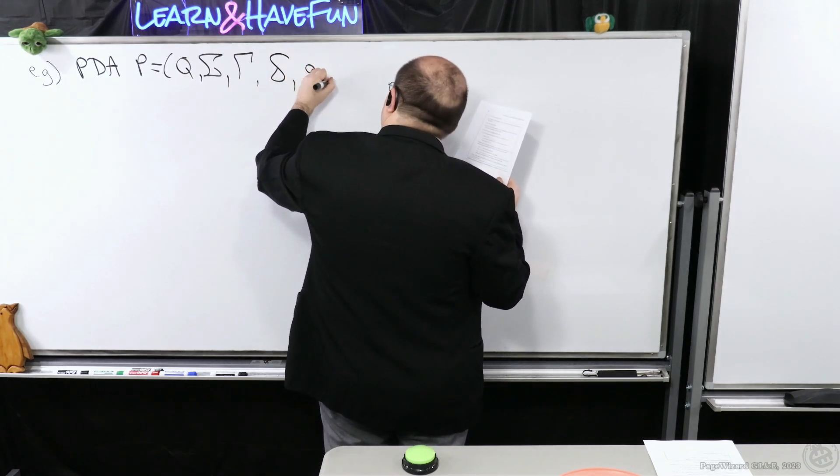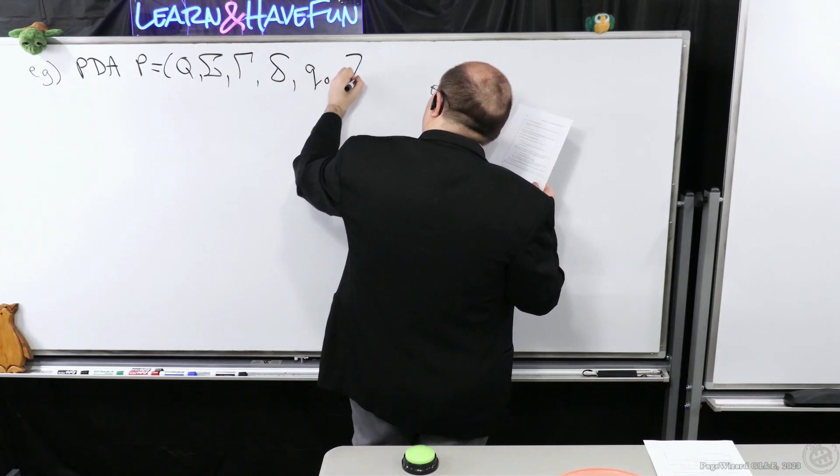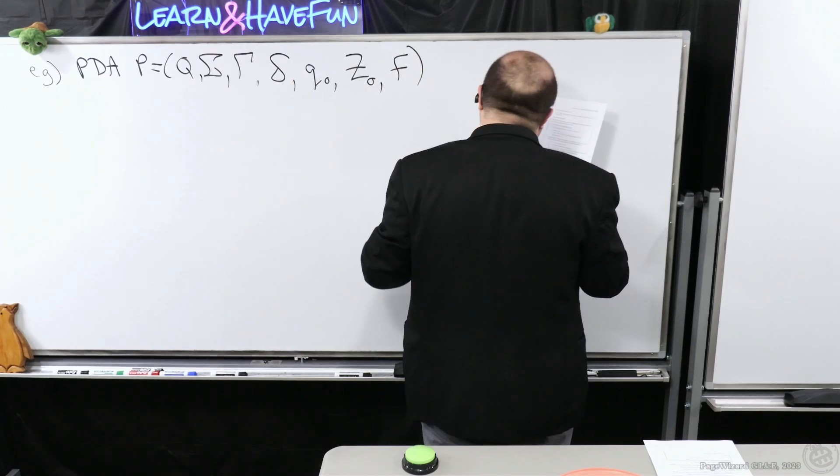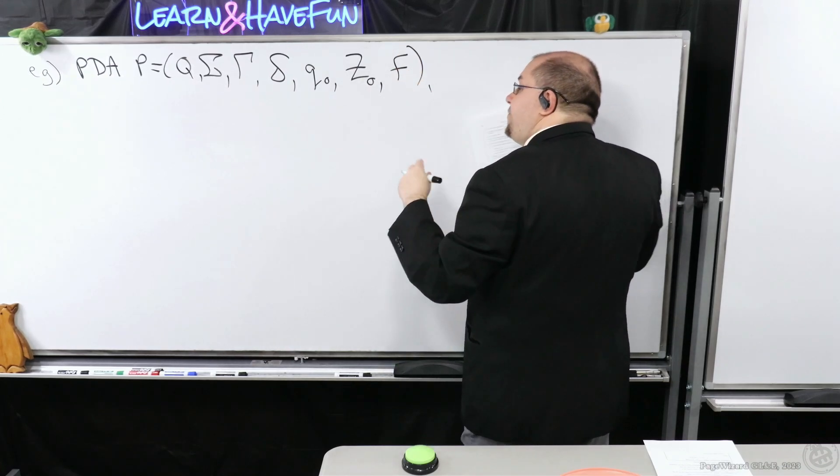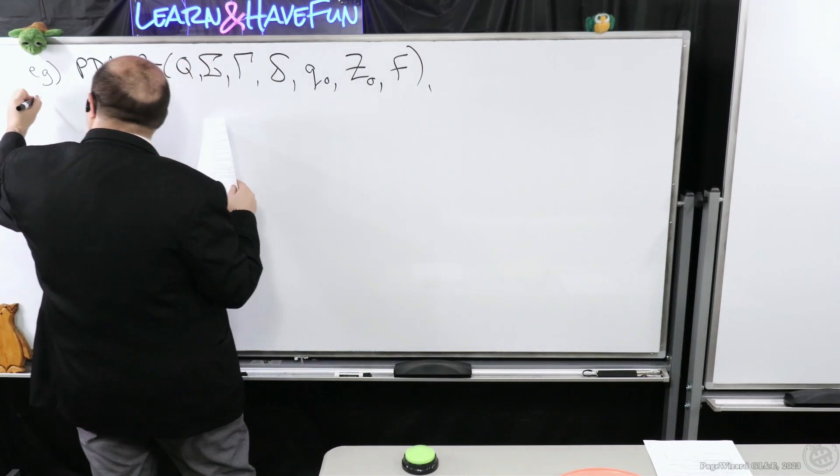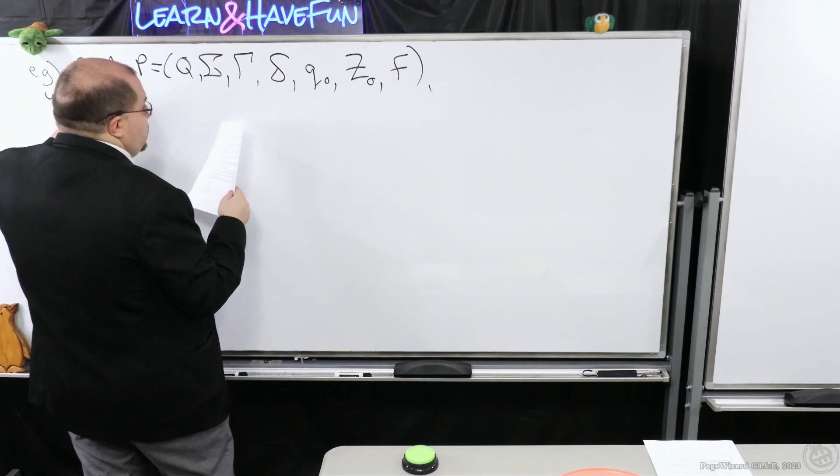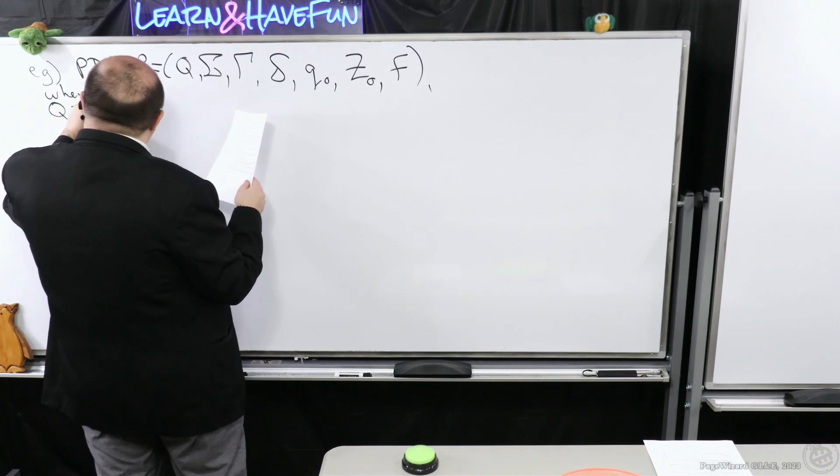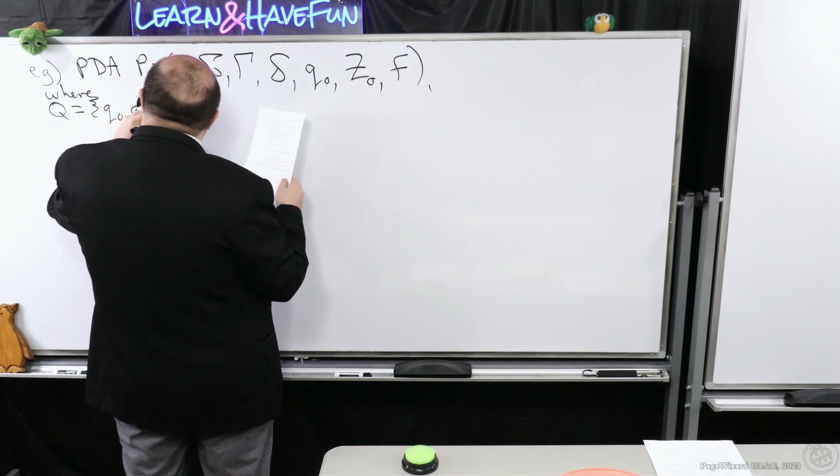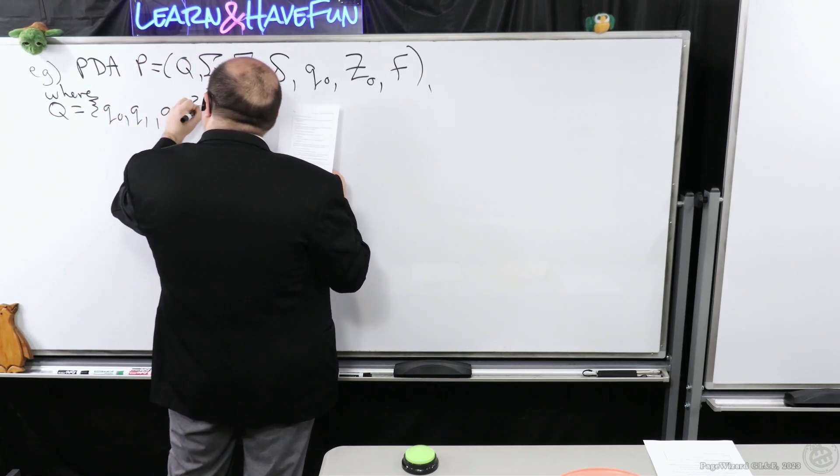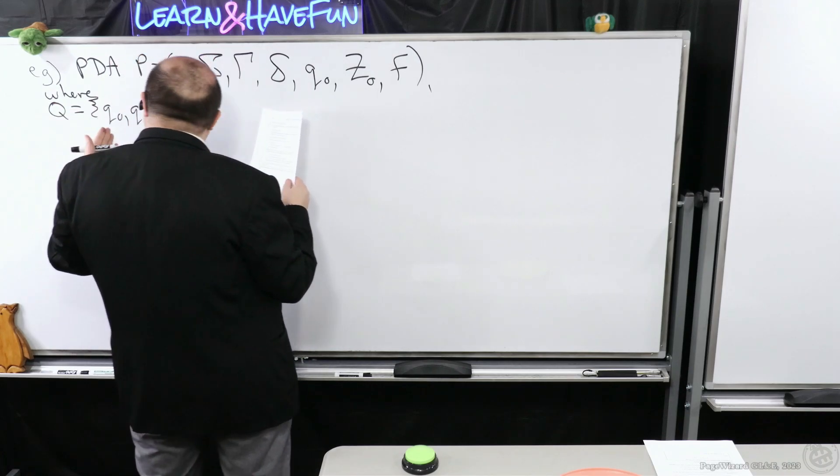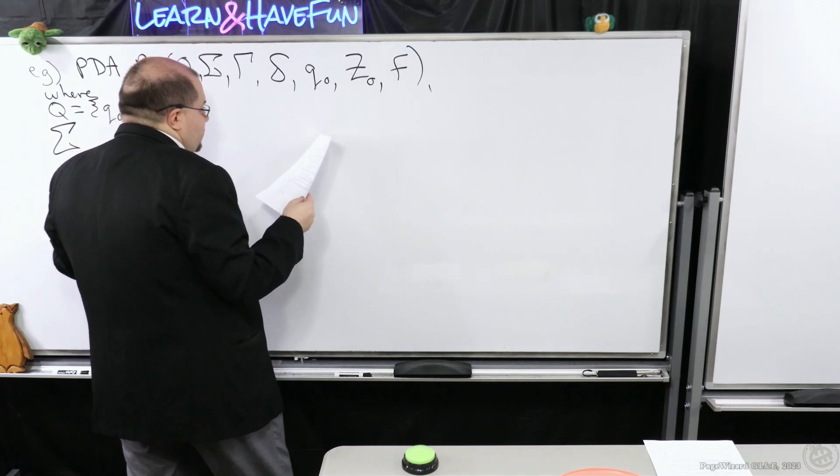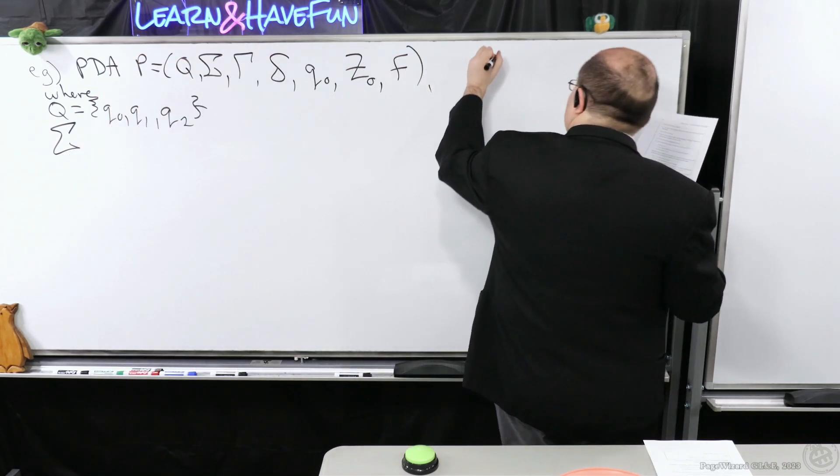...the start state, the start symbol of the stack, and of course our set of final states. We're going to define it like this, where Q is going to be exactly three states: Q0, Q1, Q2. If you've seen our design intuition here, this should match up with having three phases. So just as a reminder, we're going to be considering this language...